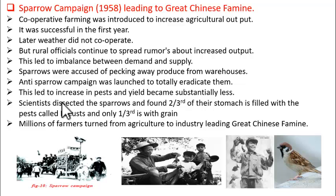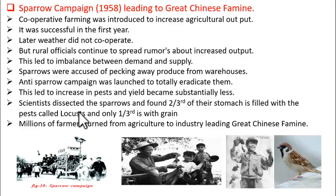The scientists concluded that sparrows are the predators of the pests of the crops. The locusts are the pests that destroy crops, and sparrows are their predators. Because the predator of the pests had been killed, the pest population increased.